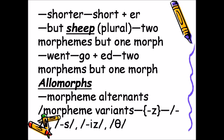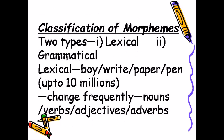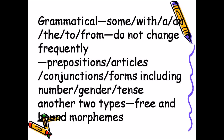Allomorphs are morpheme alternants or morpheme variants. Classification of morphemes — two types: (1) lexical, e.g., boy, write, paper, pen — up to 10 million, change frequently; nouns, verbs, adjectives, adverbs; (2) grammatical, e.g., some, with, a, and, the, to, from — do not change frequently; prepositions, articles, conjunctions, and grammatical forms including number, gender, and tense.